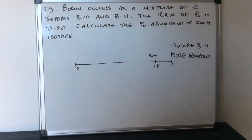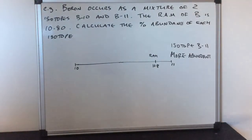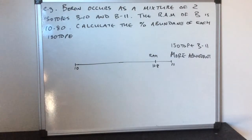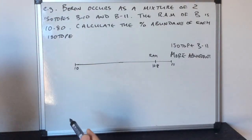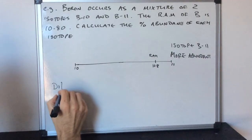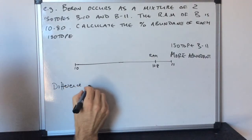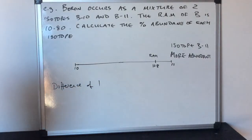Now to bring the maths into play and actually calculate the percentage abundances, we need to think about the difference between these two isotopes. We've got a difference of one. What we need to do now is find out how big the pull is of each isotope.